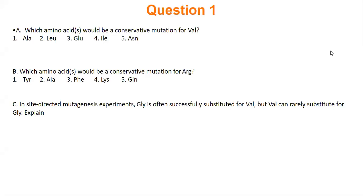Continuing from Wednesday, what we're going to talk about today is evolution in terms of proteins. We left off on this first question — I did it at the very end, but I'll recap. We're looking at mutations and have this idea of conservative mutations. We talked about three types of mutations we can see in proteins when it comes to amino acids. A conservative mutation just means it has the same properties. For valine, a conservative mutation would be any amino acid that's also nonpolar — alanine, leucine, and isoleucine.